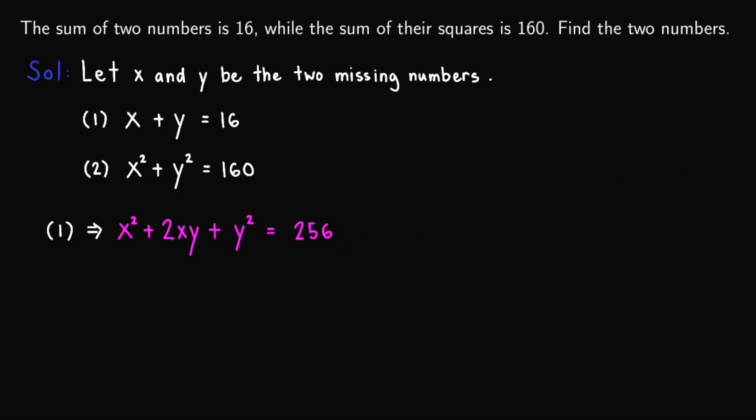Now from this one, I'll just interchange 2xy and y squared. So we'll have x squared plus y squared plus 2xy equals 256. And take note that we know the value of x squared plus y squared out here.